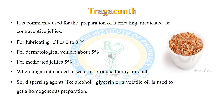Tragacanth is commonly used for the preparation of lubricating jellies and contraceptive jellies. The concentration of tragacanth required varies from 2 to 5 percent — for lubricating jellies it is 2 to 3 percent, for dermatological vehicle about 5 percent, and for medicated jellies about 5 percent. Jellies prepared with tragacanth usually contain lumps, which can be avoided by using a dispersing agent such as alcohol, glycerine, or a volatile oil.